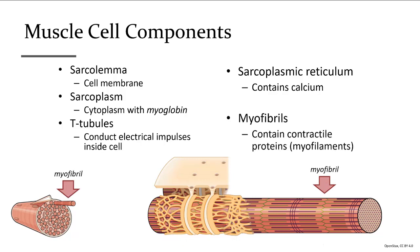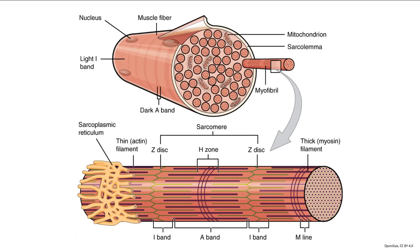The myofibrils of a muscle cell contain the proteins that work together to do the pulling, causing contraction. To review: the cell membrane is the sarcolemma; the cytoplasm is the sarcoplasm; T-tubules conduct the stimulus from the sarcolemma to the sarcoplasmic reticulum; the sarcoplasmic reticulum stores calcium, which when released starts contraction and when returned stops it. The cylindrical rods are myofibrils, inside which are the myofilaments.